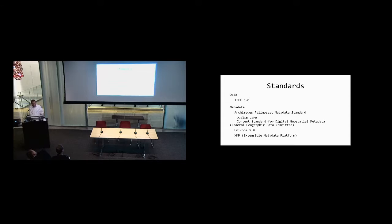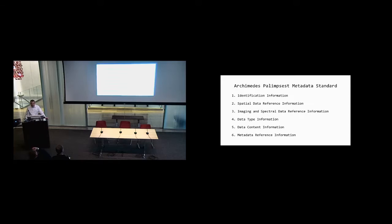The extensible metadata platform, XMP — originally an Adobe specification, now an accepted international standard for sharing metadata about media files — is used for images but also for audio files, visual files, PDFs, and other types of media. The Archimedes Palimpsest metadata has six types of information: identification for the image itself as a unique entity; spatial information describing the orientation of the object within the scene; imaging and spectral data reference information about how the image was captured; data type information including the format of the file and for processed images how it was generated; data content information about the subject of each image; and metadata reference information.